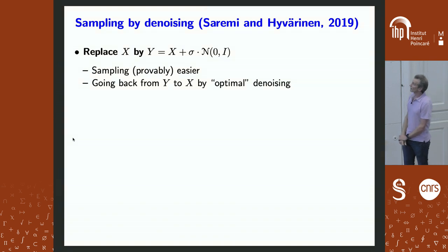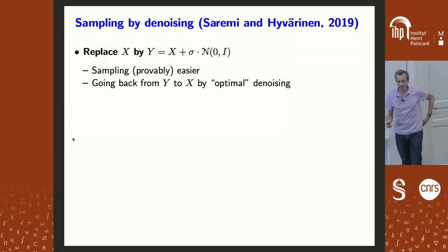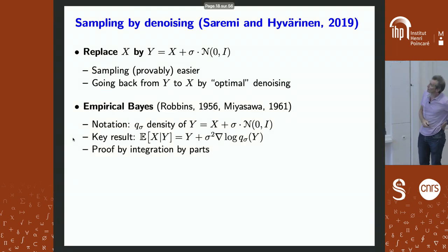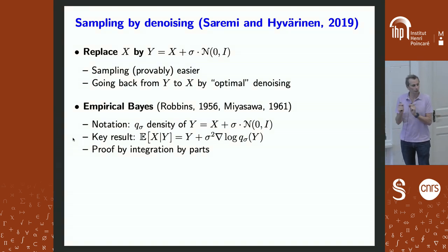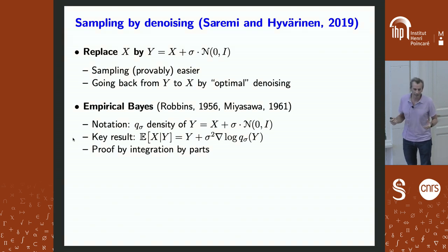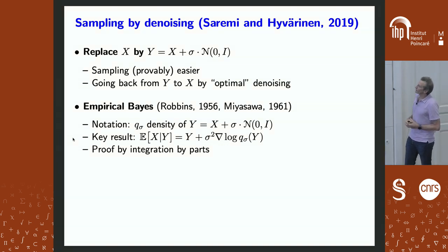Sampling is easier — how do I go back? To go back, we leverage a classical idea in statistics called empirical Bayes, which dates back to Robbins from the 1950s. This is the same Robbins as in Robbins-Monroe — the Stochastic Gradient Descent paper — from almost the same year. So Robbins is a man of many talents, and this was also done by Miyazawa in the Gaussian case.